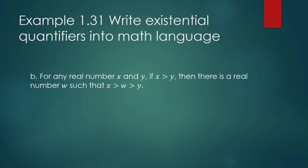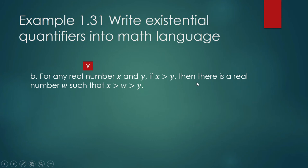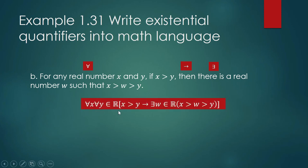Example B: 'For any real numbers x and y, if x is greater than y, then there is a real number w such that x is greater than w but w is greater than y.' 'For any real number x and y' uses the universal quantifier symbol. The 'if...then' is implication. 'There is' is an existential quantifier. So we write: for all real numbers x and y, if x is greater than y, then there exists a real number w such that x is greater than w and w is greater than y.